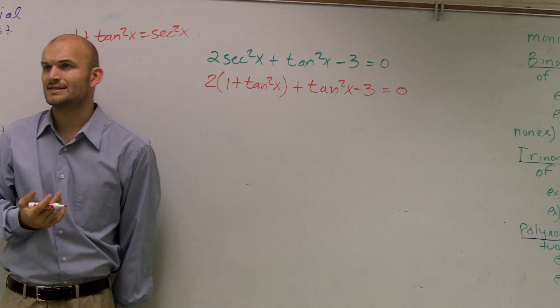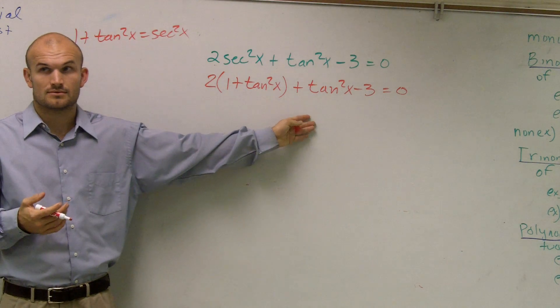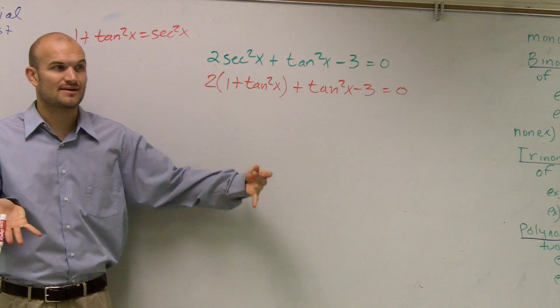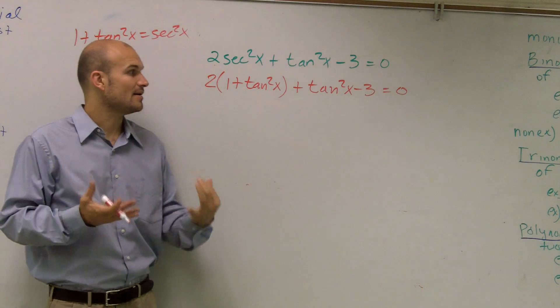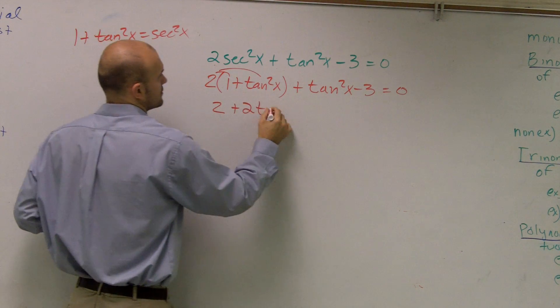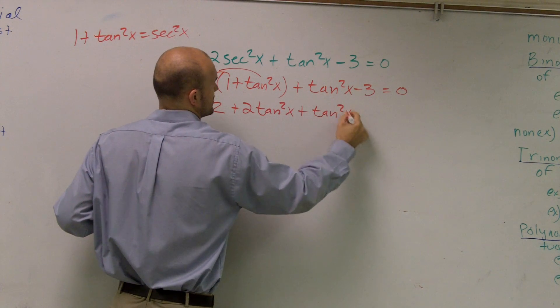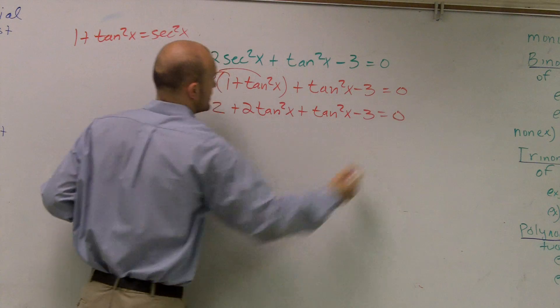Do you see why I did this? Now I have all tangents, which I can work with. When I had secants and tangents, that kind of got a little difficult. But now I have all tangents. I'll use my distributive property. 2 plus 2 tan squared of x plus tan squared of x minus 3 equals 0.